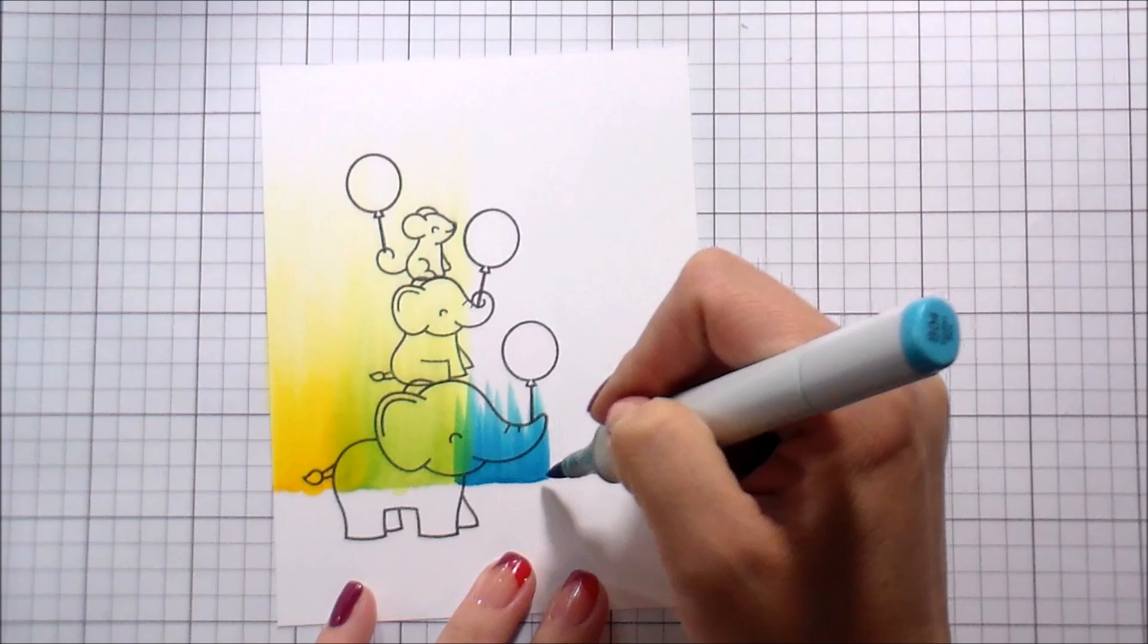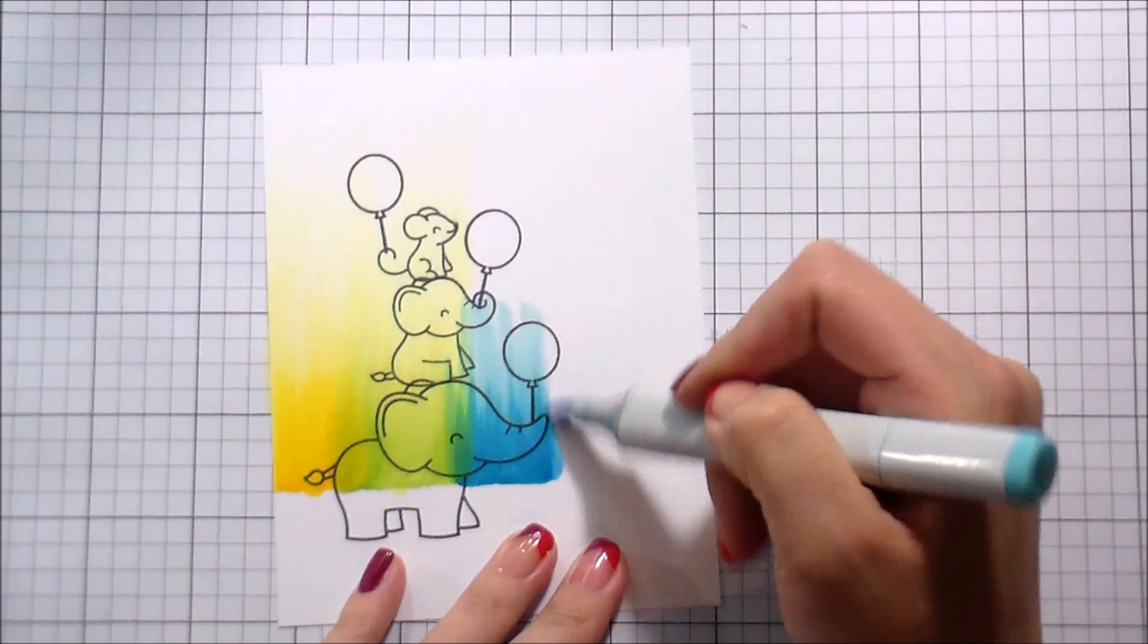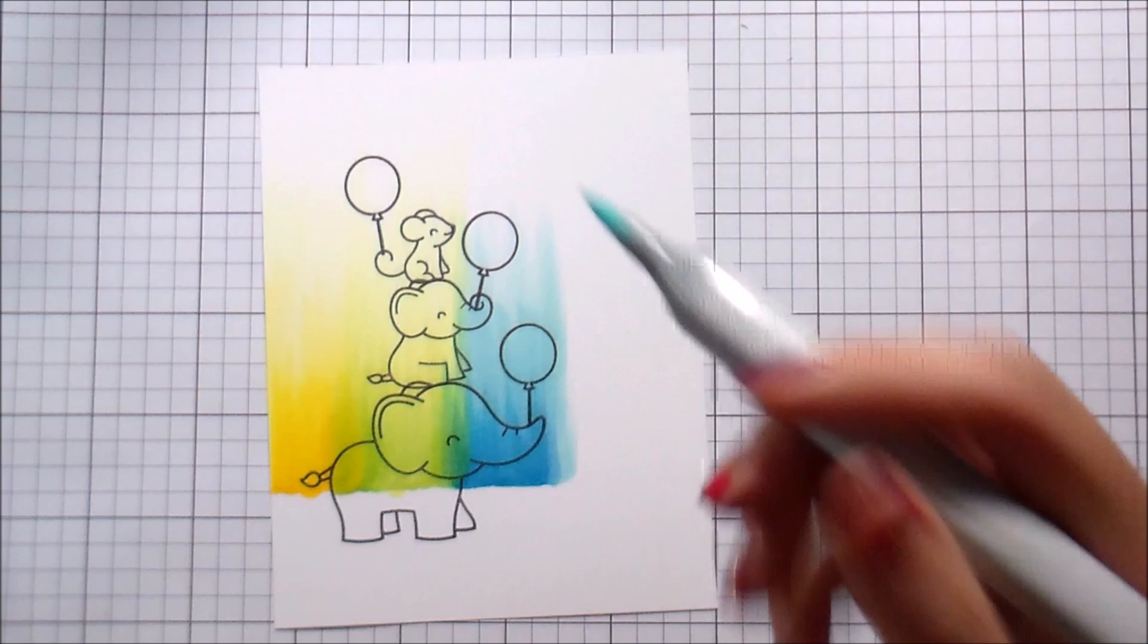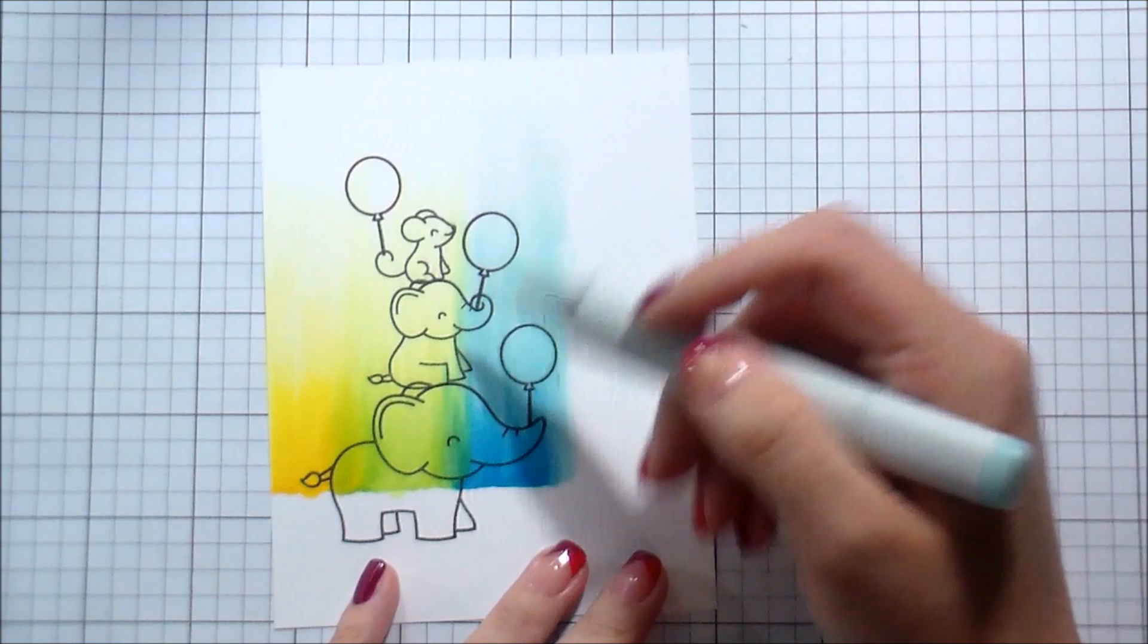But basically when I'm picking my colors, I'm picking them so that they are close to each other. So I'm blending a B04 into a YG03. That last number is the one that you want to concentrate on because that last number is the one that's going to matter. The first one doesn't matter so much because that just talks about how bright or how gray it is.